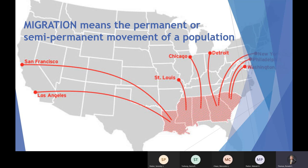Migration means the permanent or semi-permanent movement of a population — not an individual, not a vacation, but a relocation. The slide here is a representation of what we call the Great Migration, which is the movement of African Americans from the Deep South to northern and western cities, taking place in the late 1800s and early 1900s. Great masses of people decided to leave the Deep South and move to areas where there might be more jobs and better opportunities. When clusters of people move together from one place to another, that's a migratory pattern.